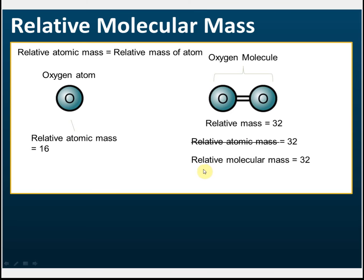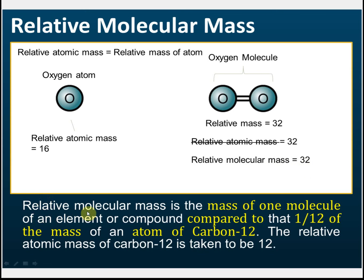Instead, we use the term relative molecular mass for molecules. By definition, relative molecular mass is the mass of one molecule compared to one-twelfth of the mass of a carbon-12 atom, which equals one AMU. The relative atomic mass of carbon-12 is taken to be 12. So the key difference is: relative atomic mass is for atoms, and relative molecular mass is for molecules.